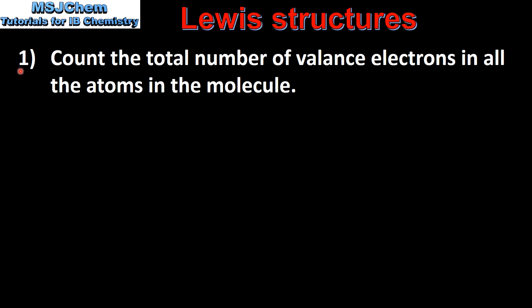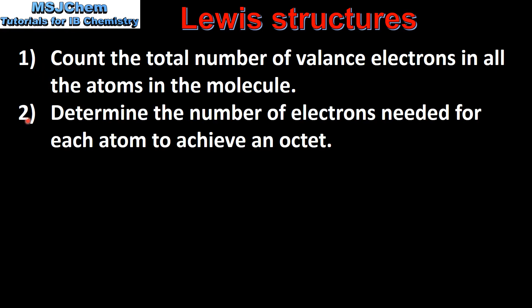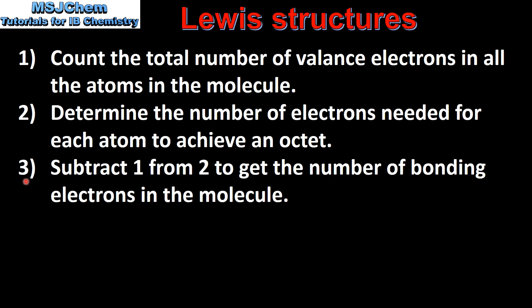Next, we look at the steps in drawing Lewis structures. The first step is to count the total number of valence electrons in all the atoms in the molecule. Next, determine the number of electrons needed for each atom to achieve an octet. An octet refers to a full outer energy level.